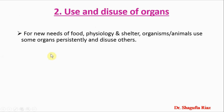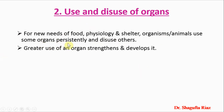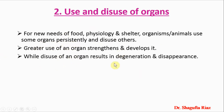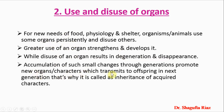The second postulate explains use and disuse of organs. For new needs of food, physiology, and shelter, organisms use some organs persistently and disuse others. Persistent use of an organ strengthens and develops it, while disuse of an organ results in its degeneration and eventual disappearance. The accumulation of such small changes through generations produces new organs or characters, which are then transmitted to offspring — hence the term 'inheritance of acquired characters.' Acquired characters are those resulting from the strengthening through persistent use, or from the disuse, of a particular organ.